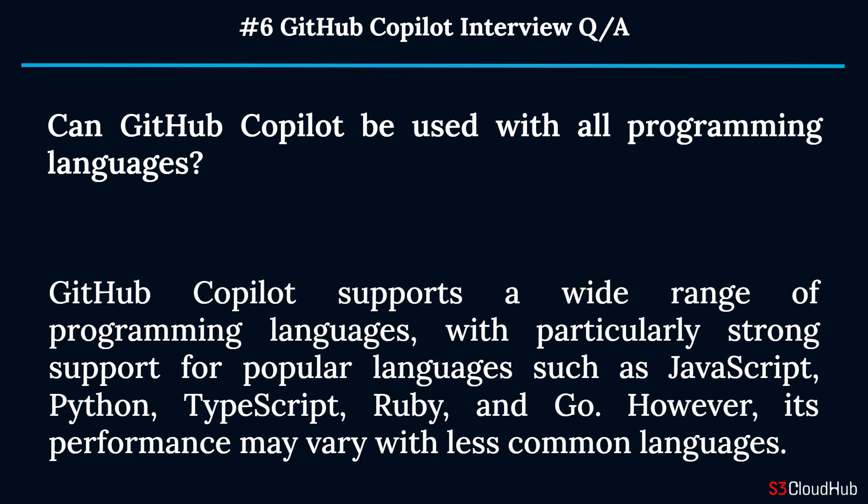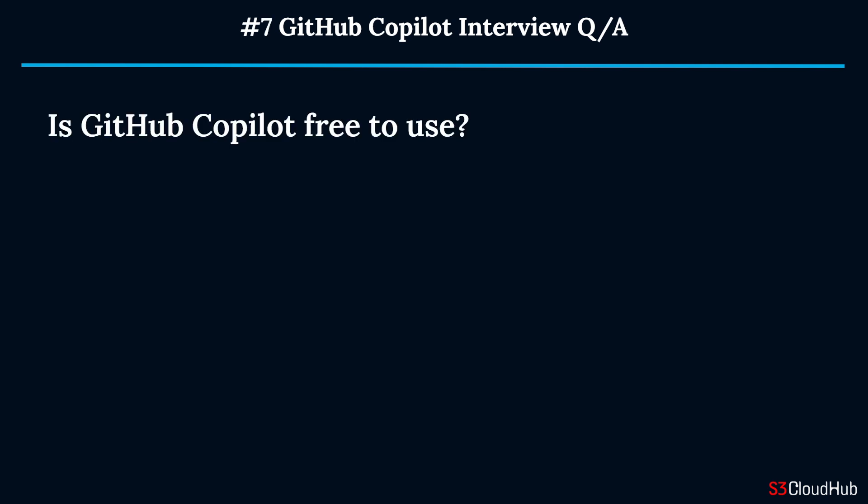GitHub Copilot supports a wide range of programming languages with particularly strong support for popular languages such as JavaScript, Python, TypeScript, Ruby, and Go. However, its performance may vary with less common languages.